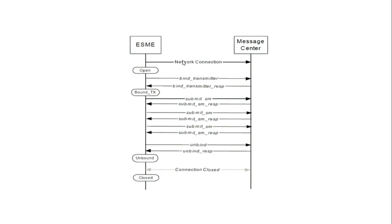The basic SMPP flow is: the SMPP client first binds with the SMPP server; if binding is successful, the server responds with a Bind Response. The ESME can then send Submit SM messages repeatedly and receive SM responses. Once done, it sends an Unbind request, the server returns an Unbind Response, and the connection is closed.